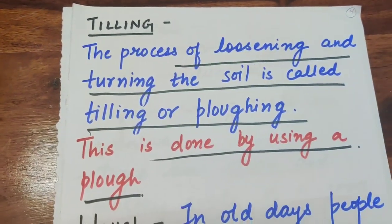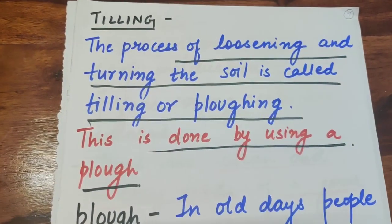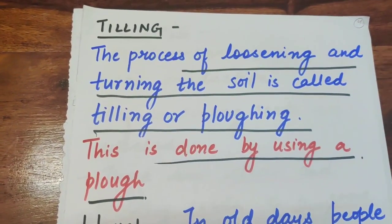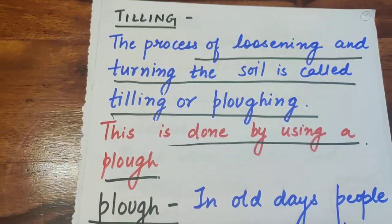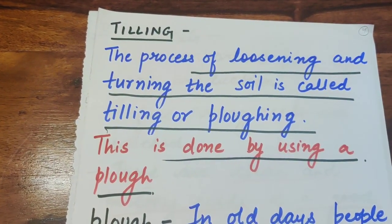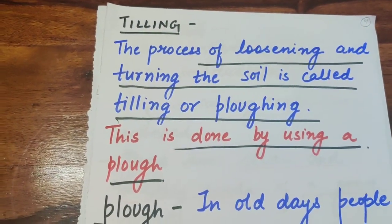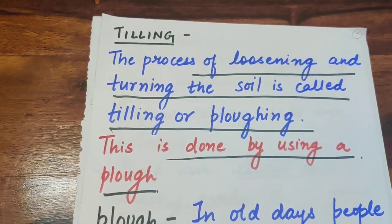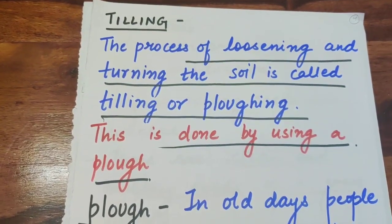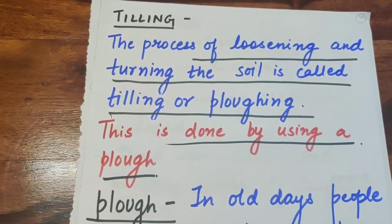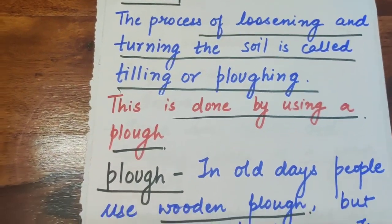The process of loosening and turning the soil is called tilling or plowing. Tilling is how we prepare the soil, done using a plow. You may have observed this process if you have a garden at home — a gardener loosens and turns the soil before planting.